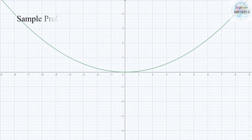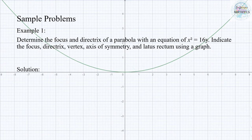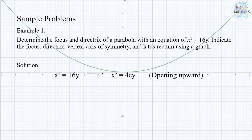Let us now solve some sample problems. Number 1: determine the focus and directrix of a parabola with an equation of x squared equals 16y. Indicate the focus, directrix, vertex, axis of symmetry, and latus rectum using a graph. Since the equation follows the form x squared equals 4Cy, it is opening upward. Next, identify the focal length by equating 16 to 4C, giving us a result of 4.